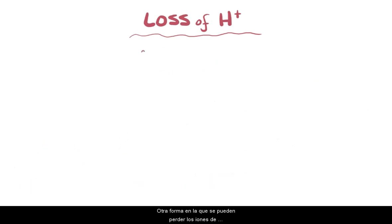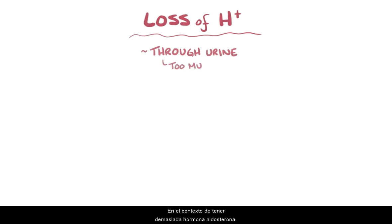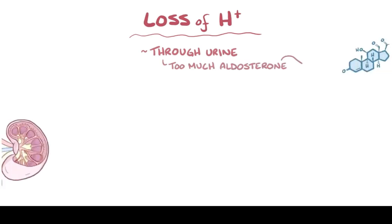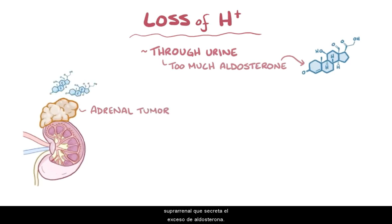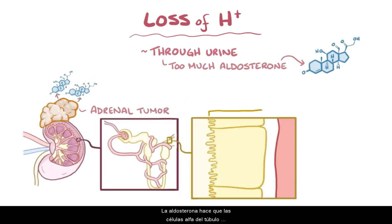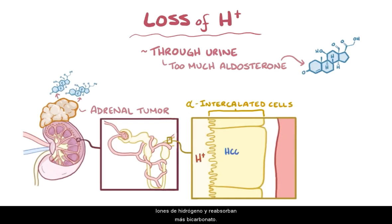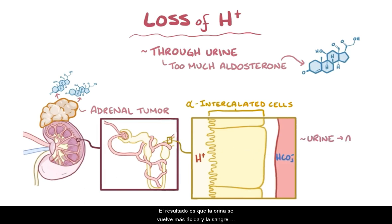Another way that hydrogen ions can be lost is through the urine, in the context of having too much of the hormone aldosterone. This can happen when there's an adrenal tumor that secretes excess aldosterone. The aldosterone makes the alpha-intercalated cells of the distal convoluted tubule and collecting duct dump out hydrogen ions and reabsorb more bicarbonate. The result is that the urine becomes more acidic and the blood becomes more basic.